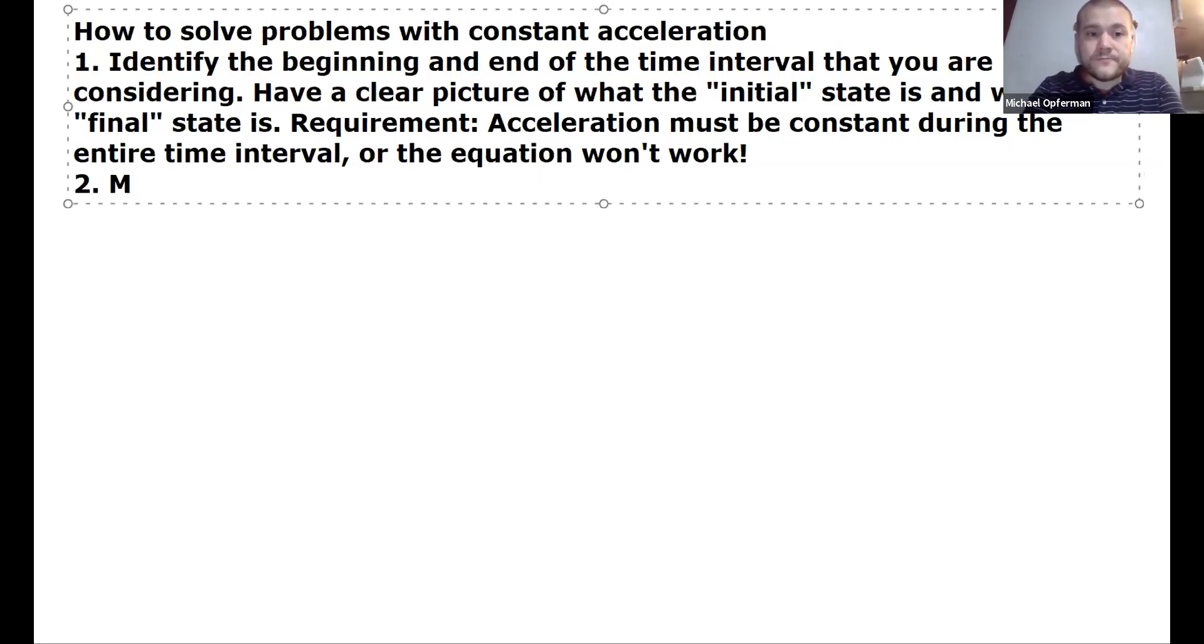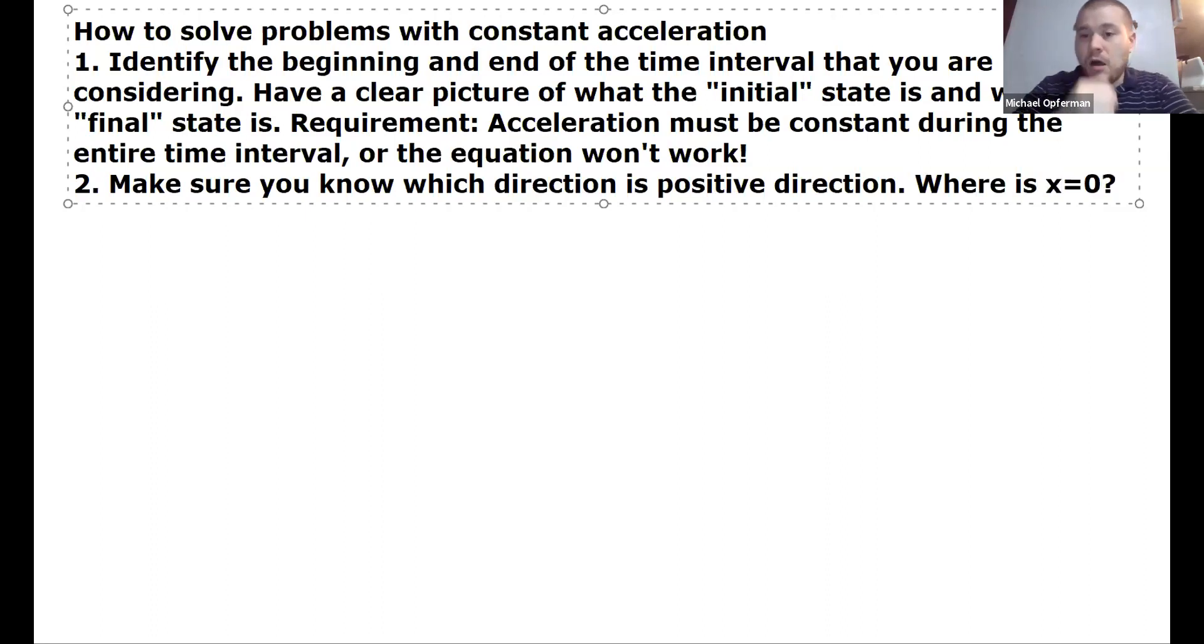Step two, make sure you know which direction is the positive direction and make sure you know also where is the origin of your coordinate system. So, for instance, are you always going to say that right is positive and up is positive? You don't have to do that. I usually do that just because it seems like it makes it a little bit easier for people to follow what I'm doing. But some problems that might be very inconvenient to do. Some people like to pick the positive direction to be whatever is convenient for the problem they're working on, rather than always choosing it to be the same. But you just have to make sure you know which way is positive so that you can make all of your vector component choices consistent with that idea.